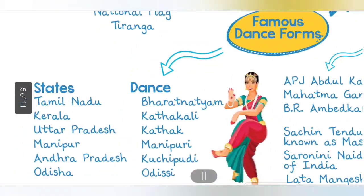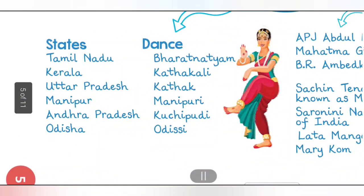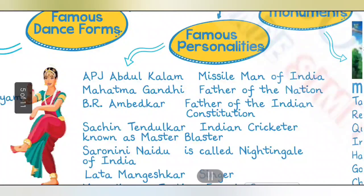Famous dance forms: states and their famous dance forms - Tamil Nadu: Bharatanatyam, Kerala: Kathakali, Uttar Pradesh: Kathak, Manipur: Manipuri, Andhra Pradesh: Kuchipudi, Odisha: Odissi.